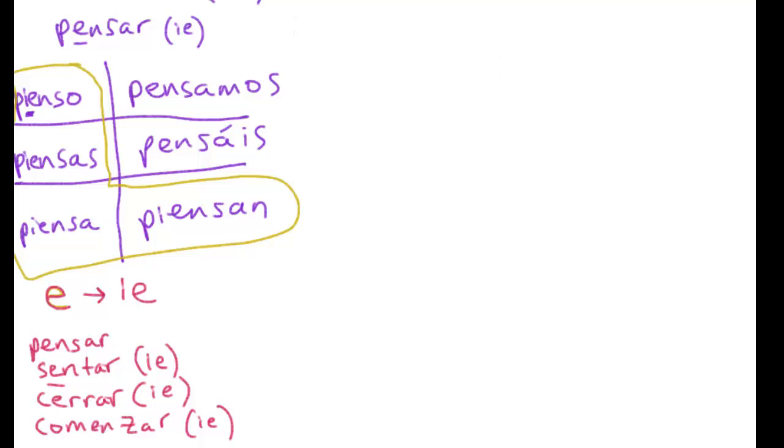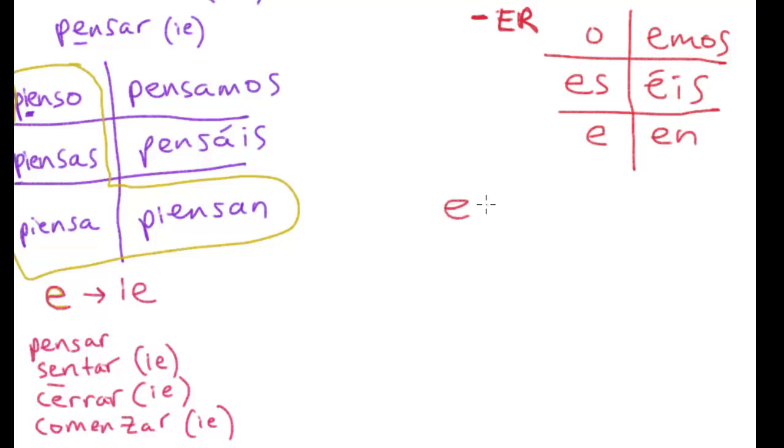This can also happen for -er verbs. These are different verbs, although essentially the only significant difference is that -er verbs have different endings. We need an example of one that changes stem. A good verb to do that with is encender. Encender is to turn on or to light.